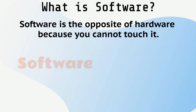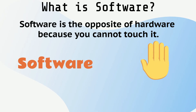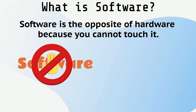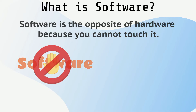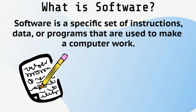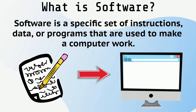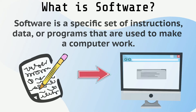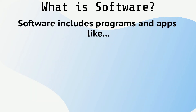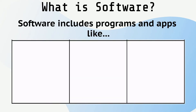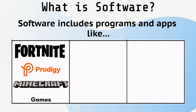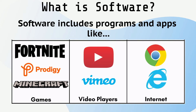Software is the opposite of hardware because you cannot touch it. Software is a specific set of instructions, data, or programs that are used to make a computer work. Software includes programs and apps like games, video players, and the internet.